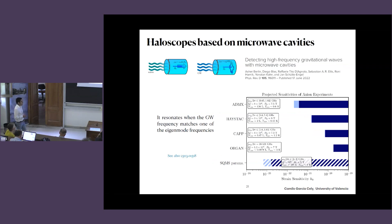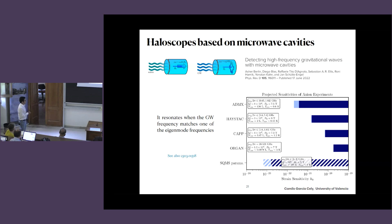Let's talk about haloscopes based on microwave cavities. The physics is simple: an axion generates an effective current, which induces an electromagnetic signal. When that signal matches one of the modes of the cavity, it resonates. Gravitational waves do exactly the same thing — they generate an effective current that creates electric and magnetic fields, and those will resonate if they match the eigenmodes of the cavity.